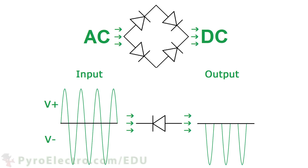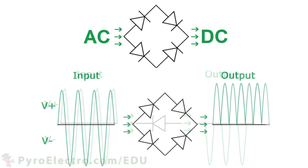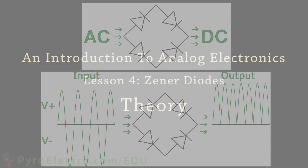In this lesson, we're going to look at diodes again, but this time we're going to test out a different type of diode, one called a Zener diode.